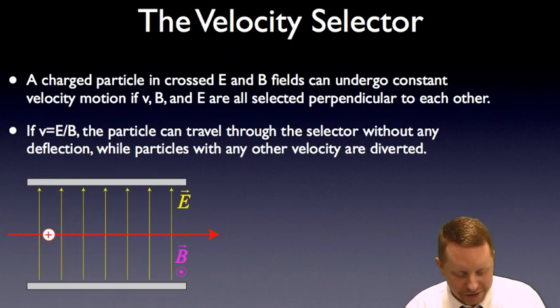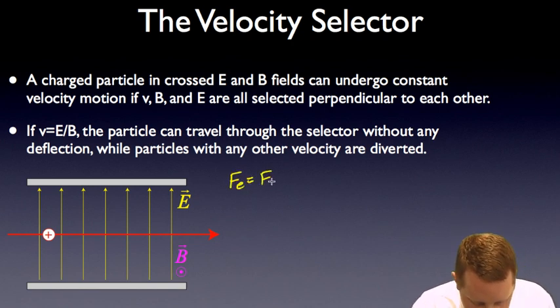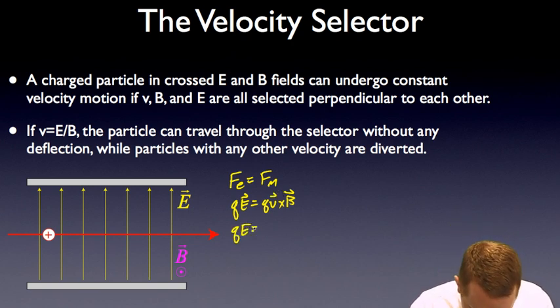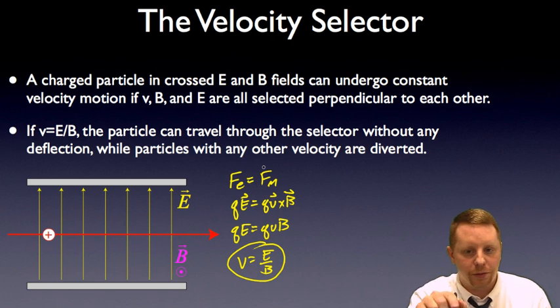And an interesting application of this is the velocity selector apparatus. If we have a charged particle in crossed electric and magnetic fields, it can undergo constant velocity motion if the velocity, the magnetic field strength, and the electric field strength are all selected perpendicular to each other. They're at just the right settings. If the velocity equals e divided by b, the particle can travel directly through the selector without any deflection, while particles with any other velocity are deflected off one way or another. How that works, the electric force must equal the magnetic force. Or, qe equals qv cross b. And again, assuming that those are perpendicular, we'll just look at their magnitudes. qe equals qvb, or v equals e divided by b. If that's the case, the electric force and the magnetic force are exactly balanced as the particle travels through undeflected.